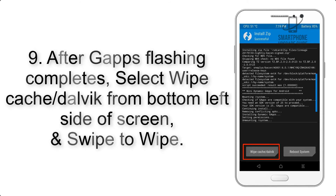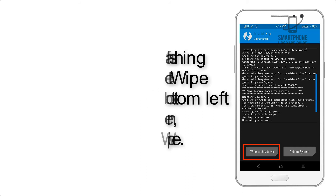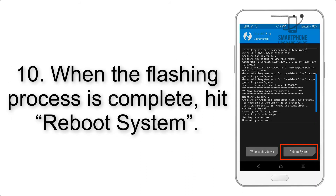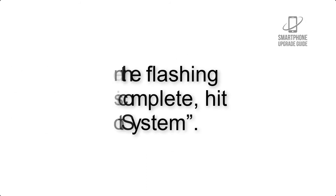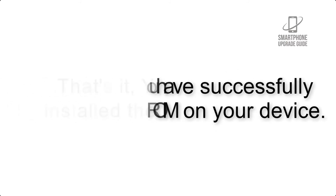Step 9: After GApps flashing completes, select Wipe Cache and Dalvik from the bottom left side of the screen and swipe to wipe. Step 10: When the flashing process is complete, hit Reboot System. That's it — you have successfully installed the ROM on your device.